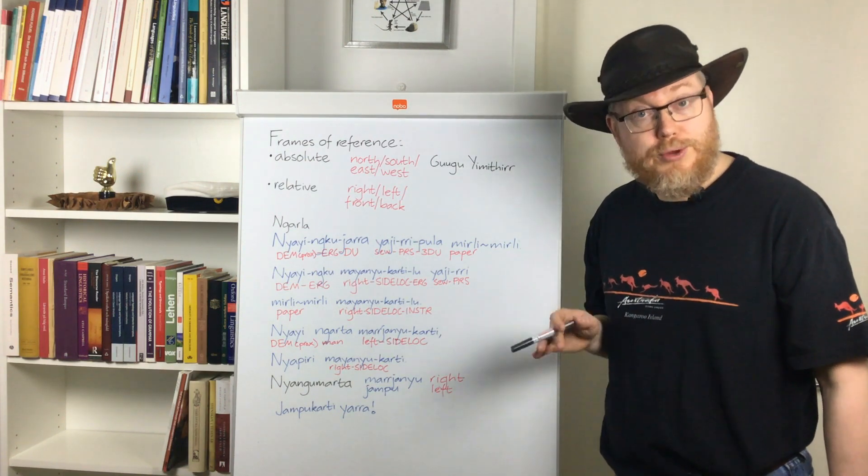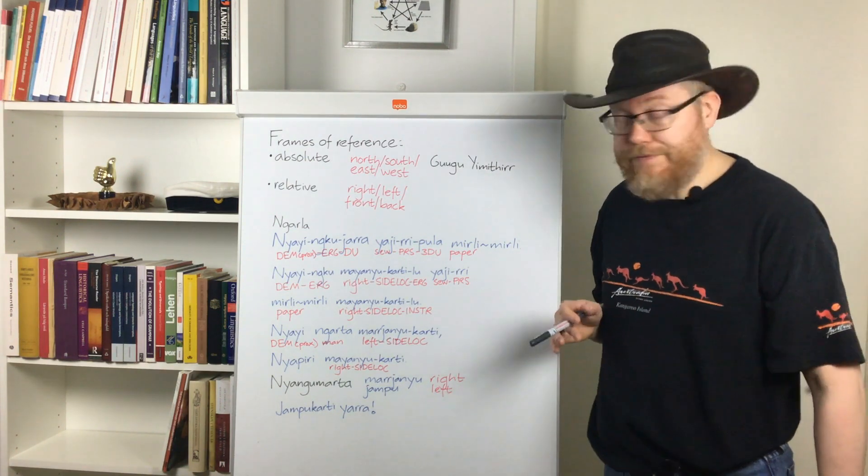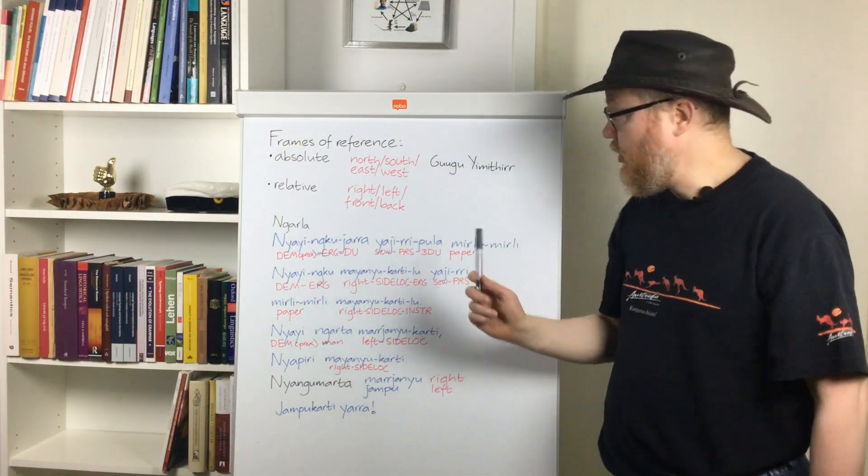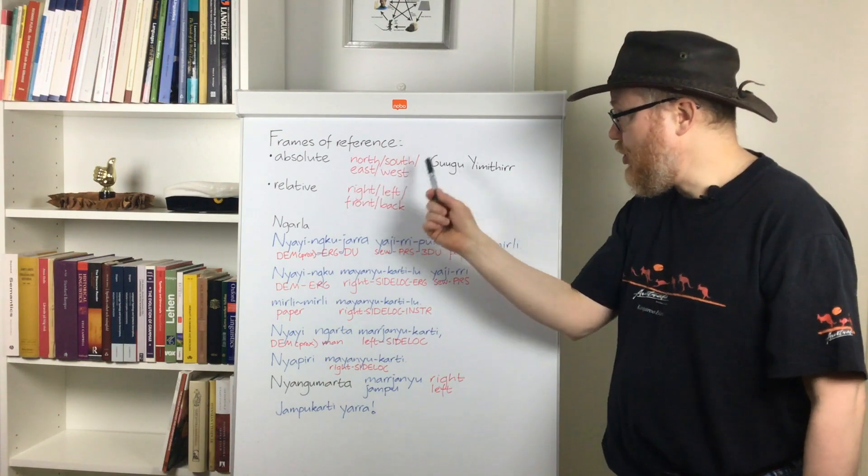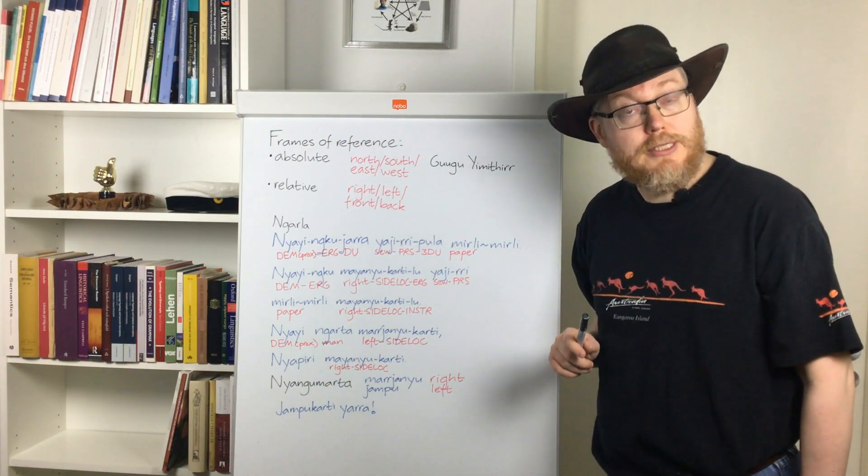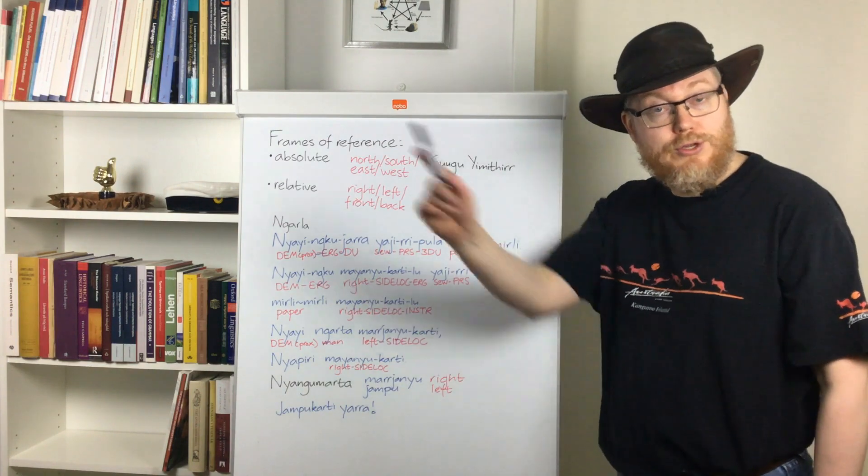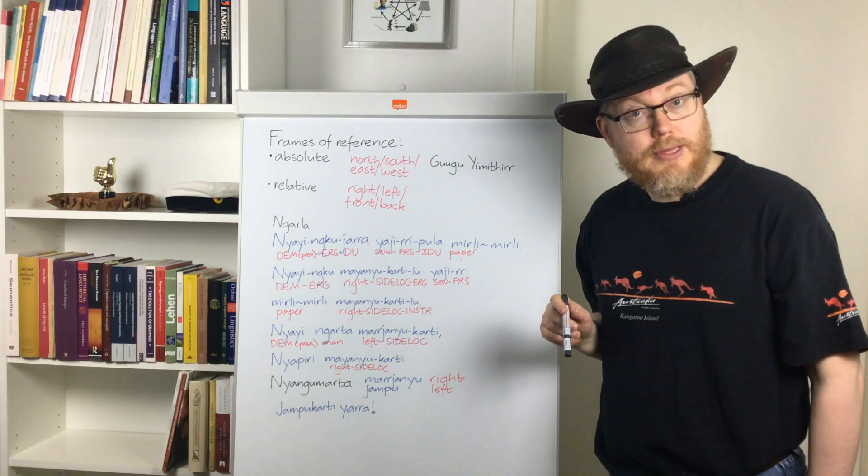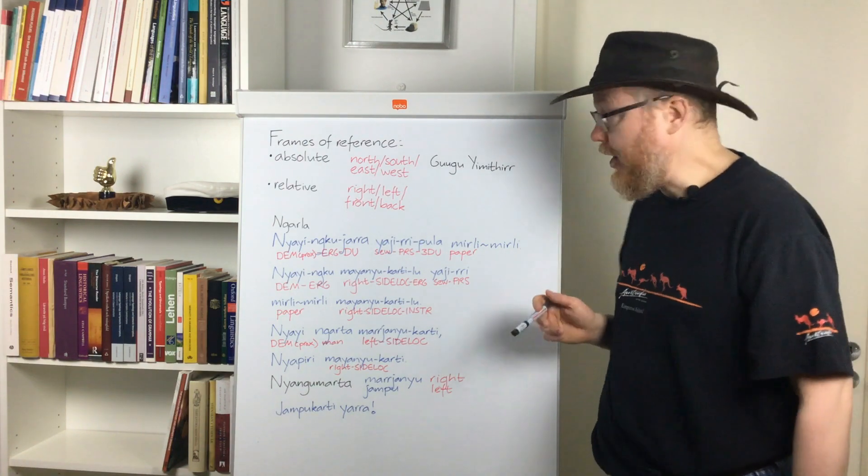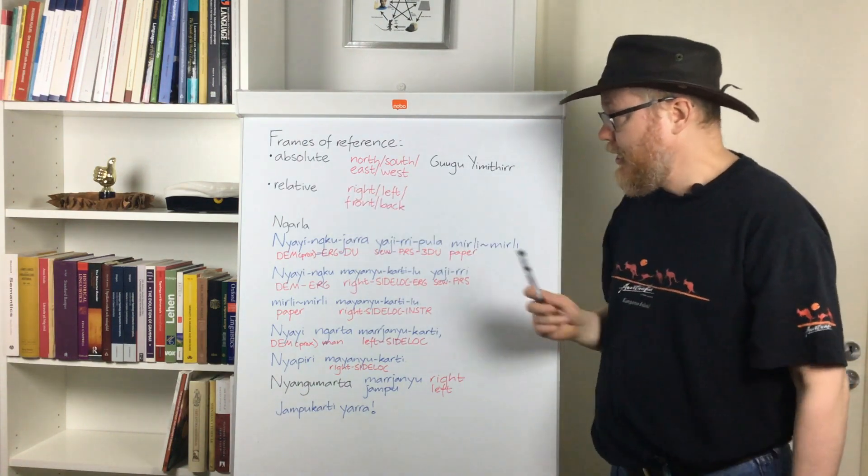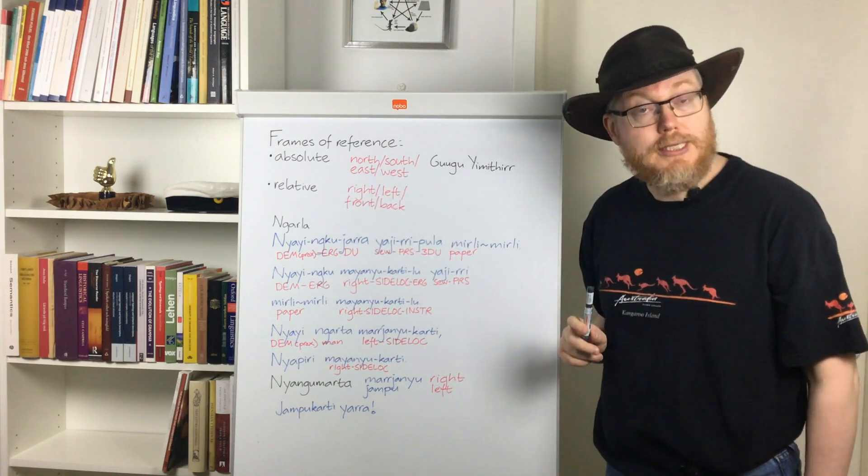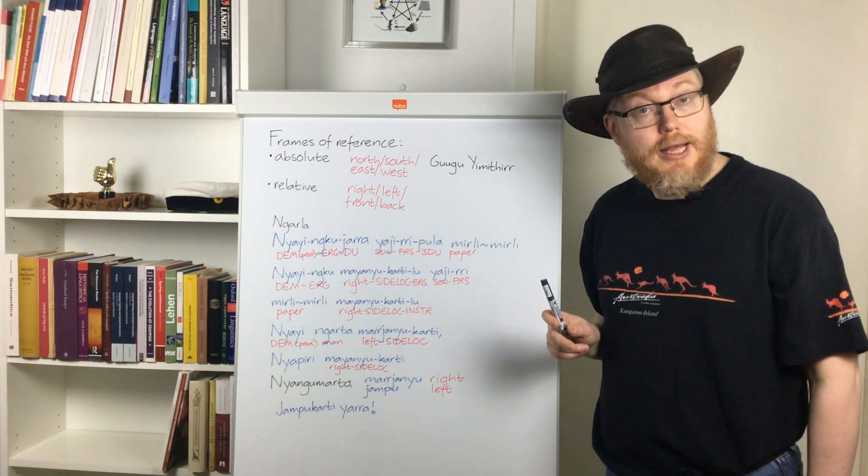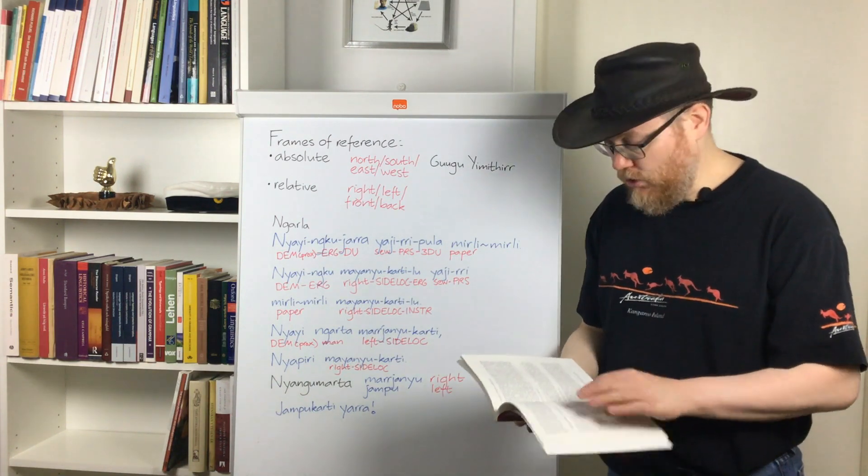So he introduces three frames of reference. We have the absolute one where people make use of the words for the compass points when referring to where things are located in relation to other things. We have the relative frame of reference where the speaker is what is important and where the speaker happens to be standing or sitting or whatever.